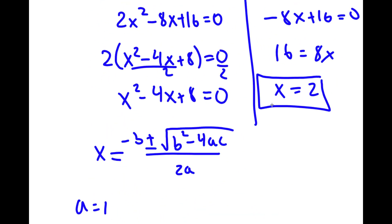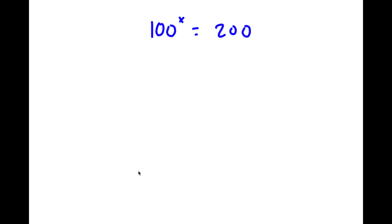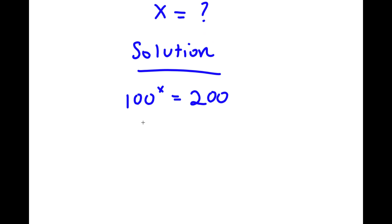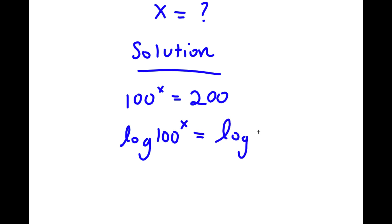So these are my three solutions to this problem. Now in this next problem, I have 100 to the power of x is equal to 200, and I'm going to find the value of x. Starting with 100 to the power of x is equal to 200.